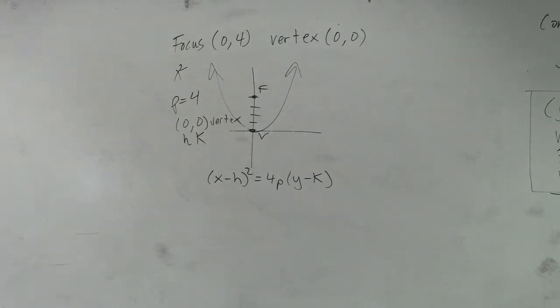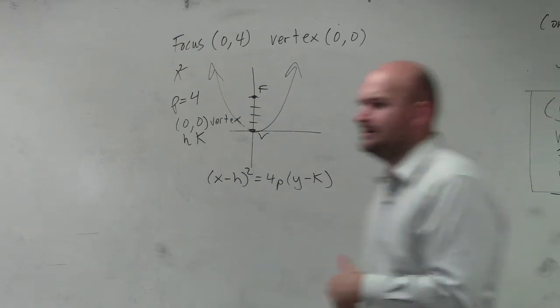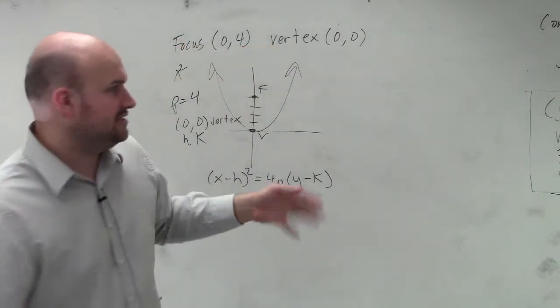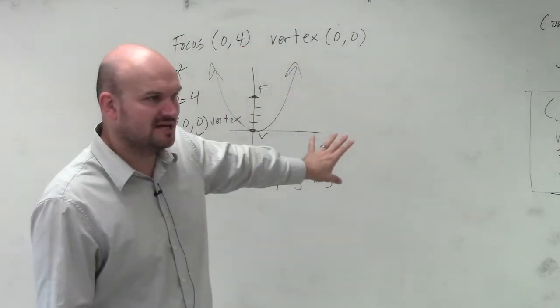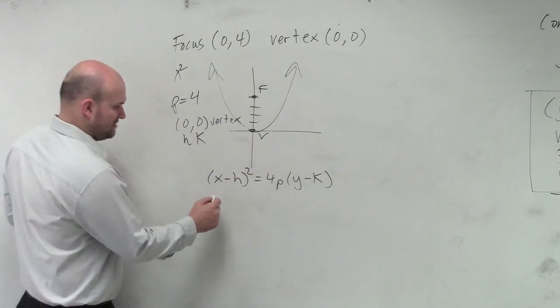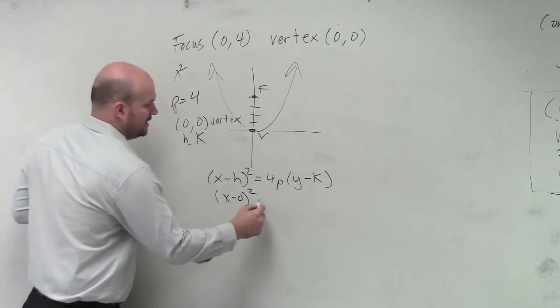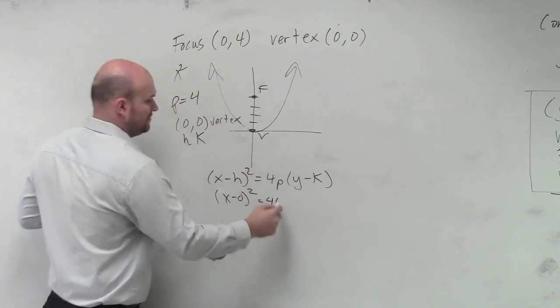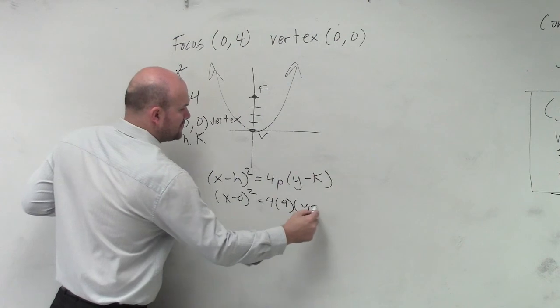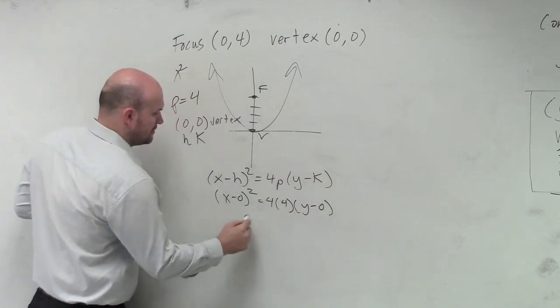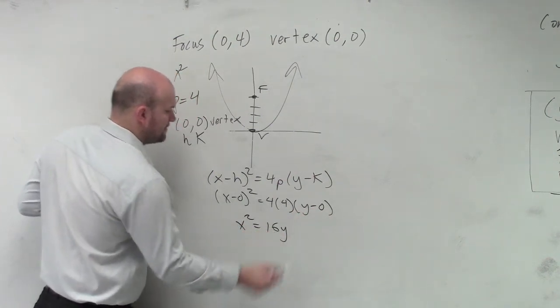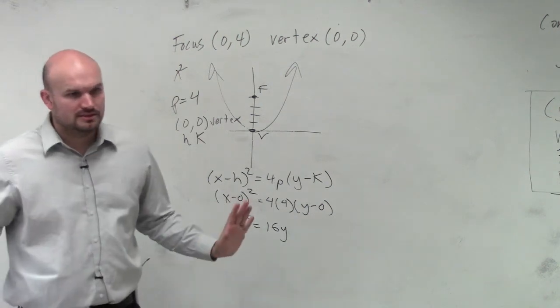You guys can write down the other equation if you want, and if you want the formal notes, I can give it to you. But in my experience, it's just a waste of time to try to memorize all this stuff. The best thing is to understand and know what you're given. So we have (x - 0)² = 4(4)(y - 0). Done.